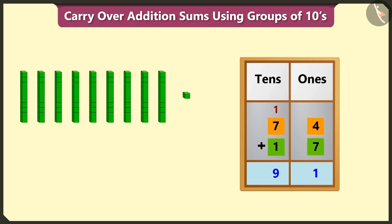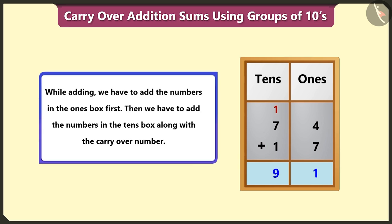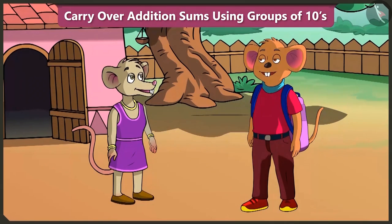Seventy-four added to seventeen will give us a total of ninety-one. Yes, while adding, we have to first add the numbers in the ones box, and then we have to add the numbers in the tens box along with the carry-over number. Yes, let's go now.